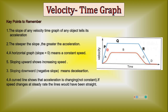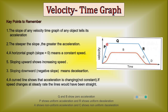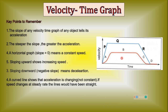The gradient of the velocity-time graph gives you the acceleration. The steeper the slope, the greater the acceleration. A horizontal graph means slope is zero — it represents constant speed, meaning speed is not changing with time. Sloping upward shows increasing speed. A curved line shows that acceleration is changing and is not constant. If the speed changes at a steady rate, the line would be straight. Sloping downward means negative slope — this is deceleration, a retarded motion where speed is decreasing.